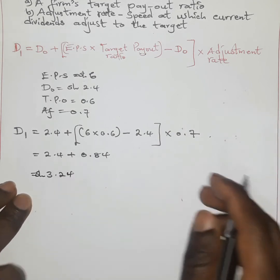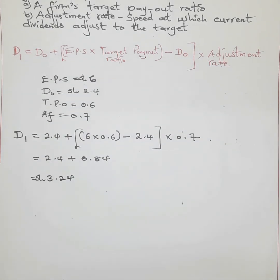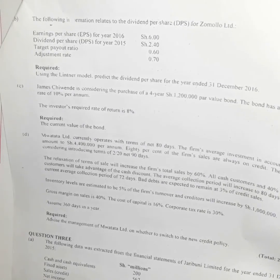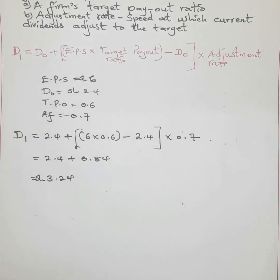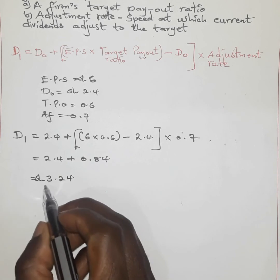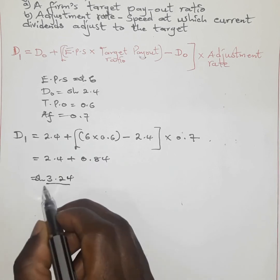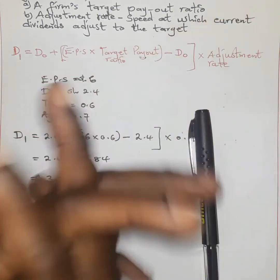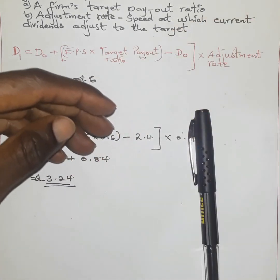So 3.24 shillings is the dividend which is supposed to be paid in the year ended 31st December 2016, and this is the target as per the linear model. Thank you — please don't forget to subscribe for more videos.